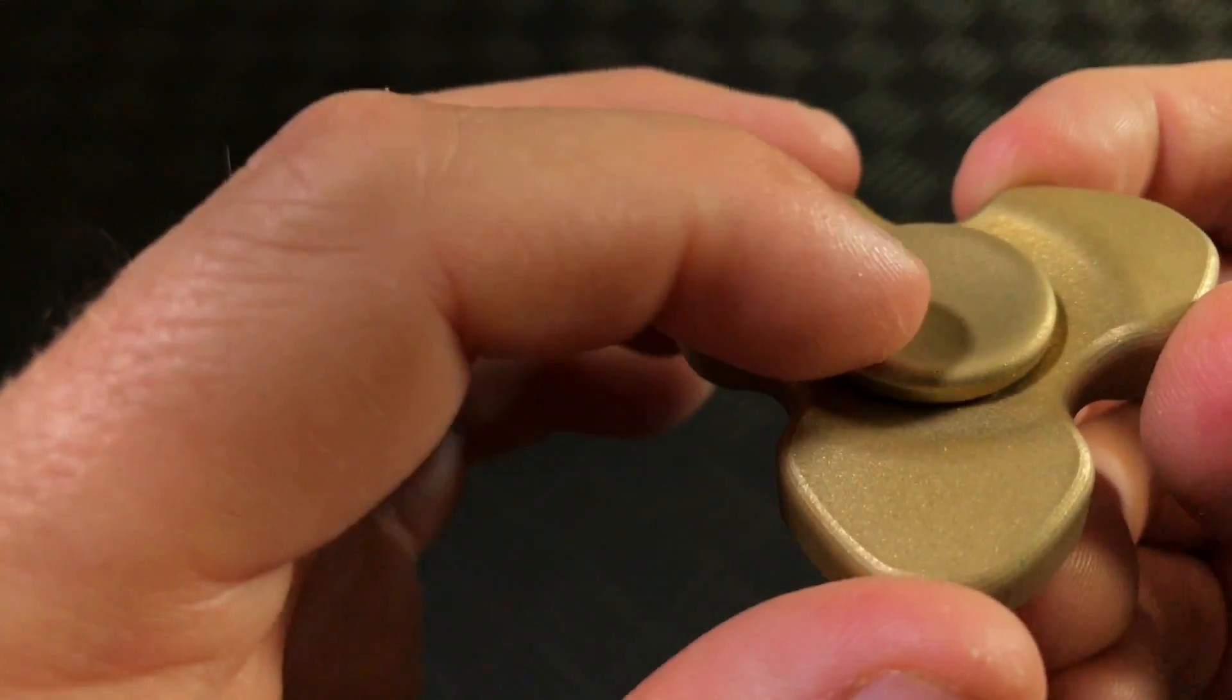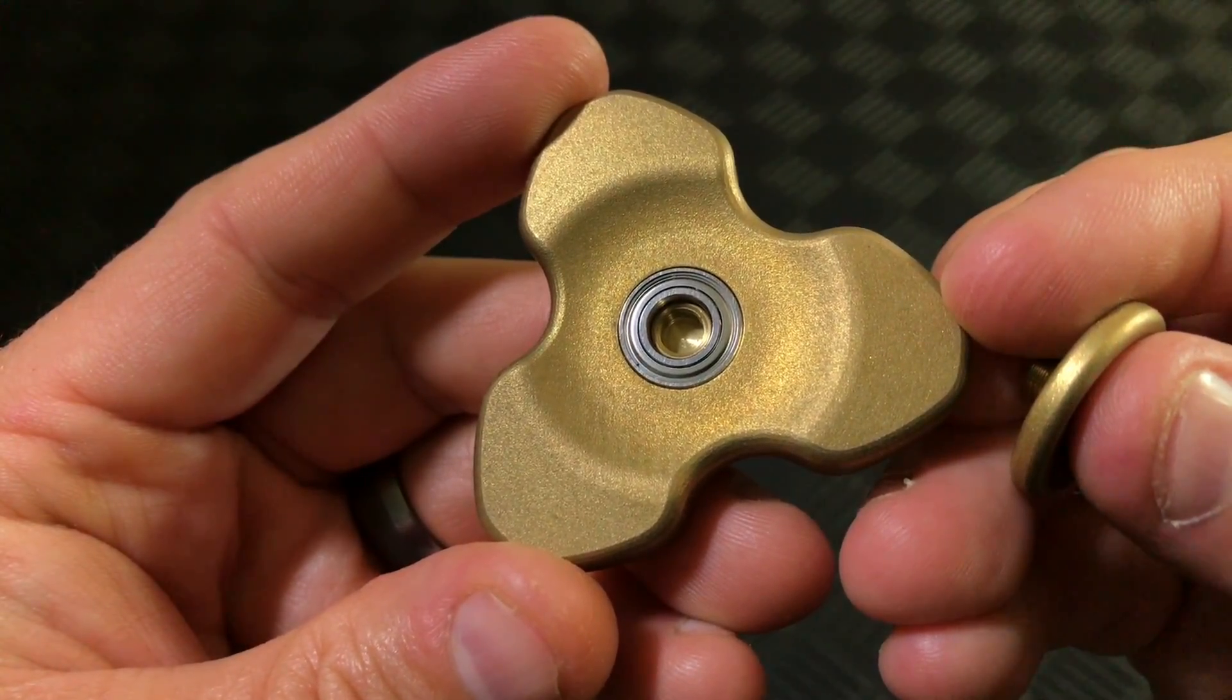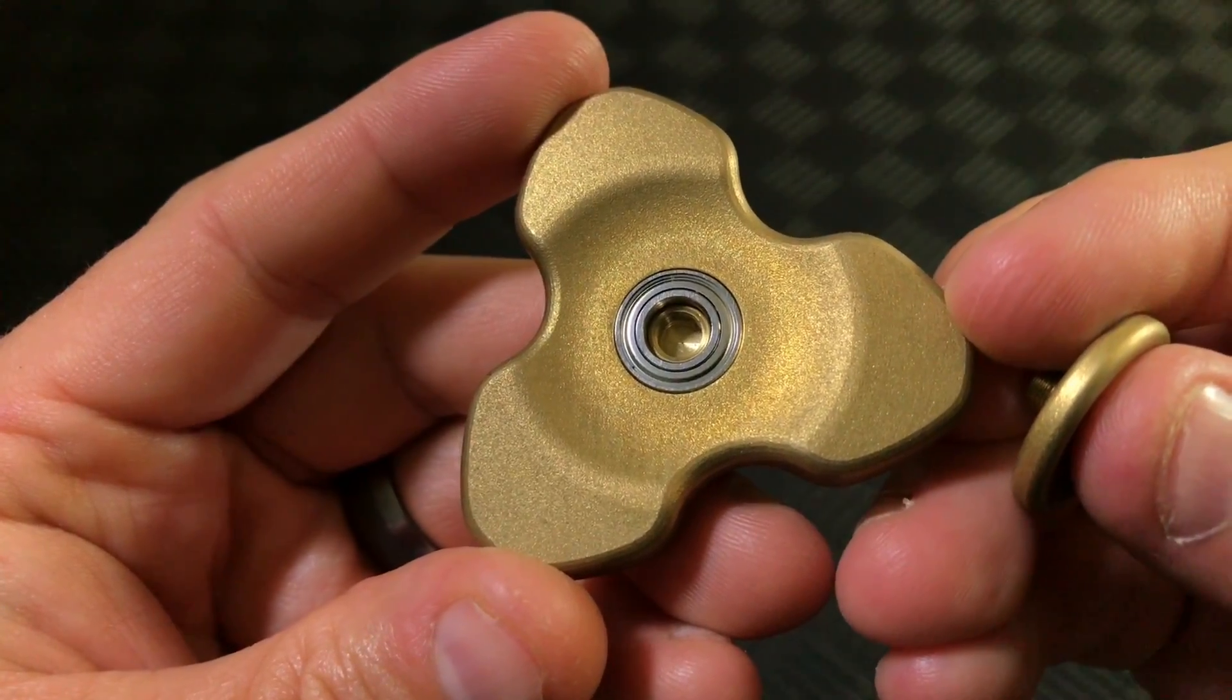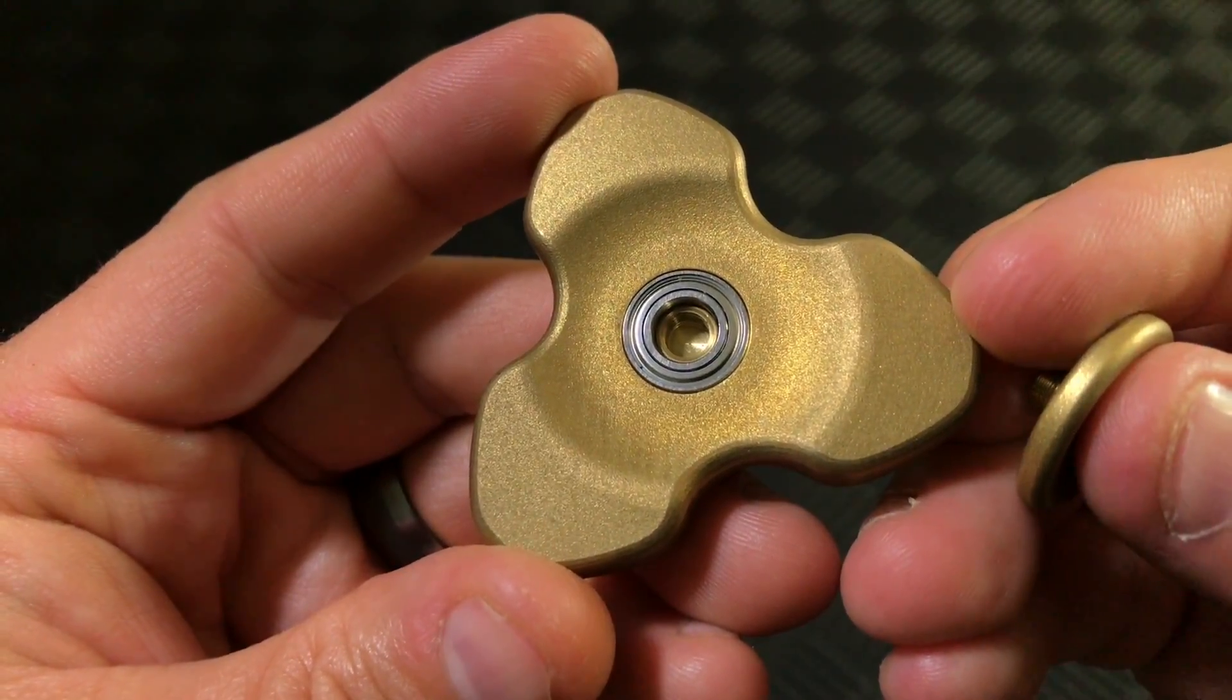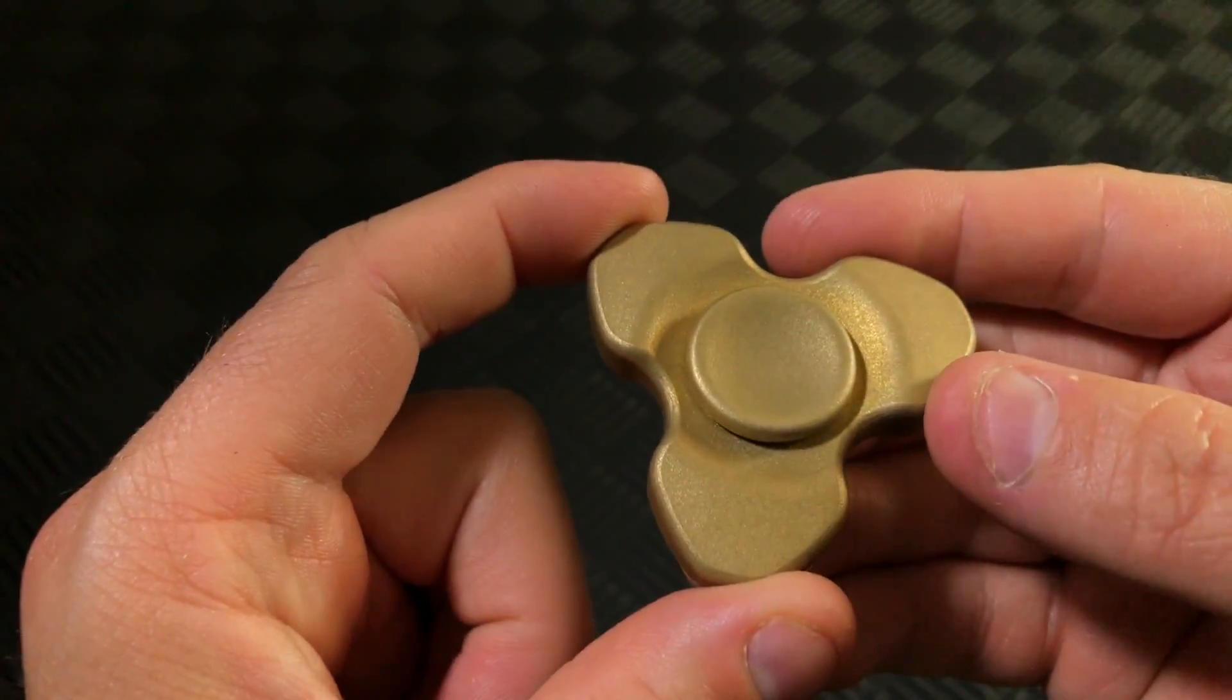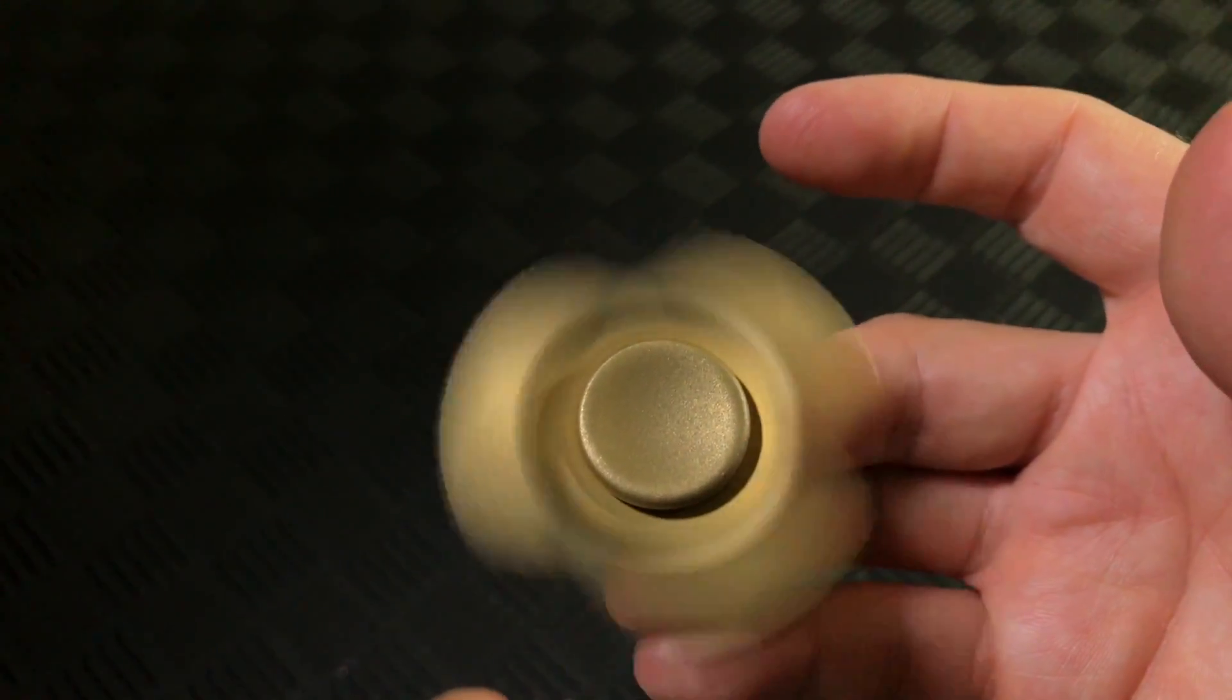Underneath you can see the shielded R188 bearing that has been press fit, and Aise Weight has opted to use the legendary One Drop bearing for ultra smooth performance. At just under two inches in diameter and about 3.5 ounces, I was still able to break six minutes on the table spin, which is awesome for a bearing that is focused on being quiet and smooth.